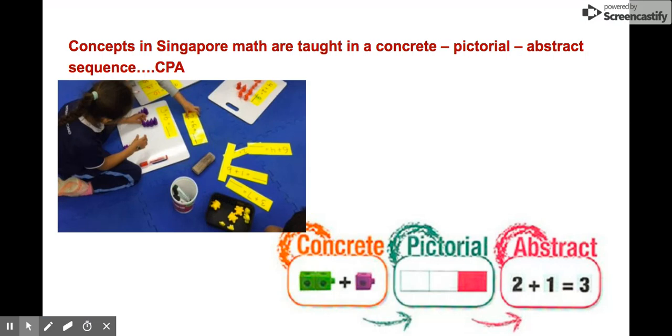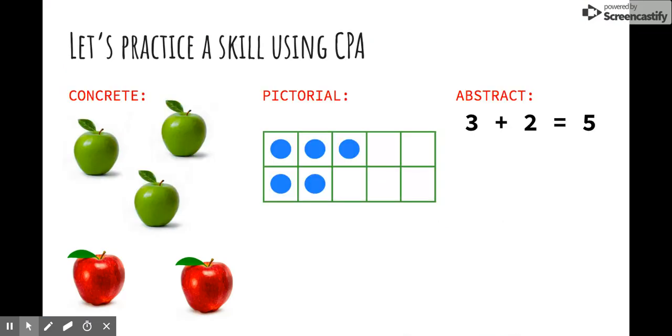We teach math concepts using CPA: concrete, pictorial, abstract. Here's an example of CPA. The concrete part is the part students are actually touching with their hands. So I wouldn't be putting pictures of apples. I would put actual apples out for them to see this concrete concept. Next comes pictorial. This is a 10 frame to show the same thing. Lastly comes abstract, where we use numerals and operations.